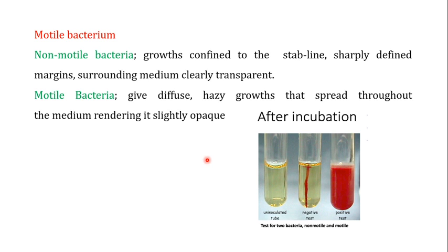Clostridium botulinum is a motile bacterium. If you look at non-motile bacteria in media, they only grow in the stab line with sharply defined margins and a transparent surrounding medium. Motile bacteria give a diffuse hazy growth that spreads throughout the medium, rendering it slightly opaque. Clostridium botulinum would show that diffuse growth pattern.